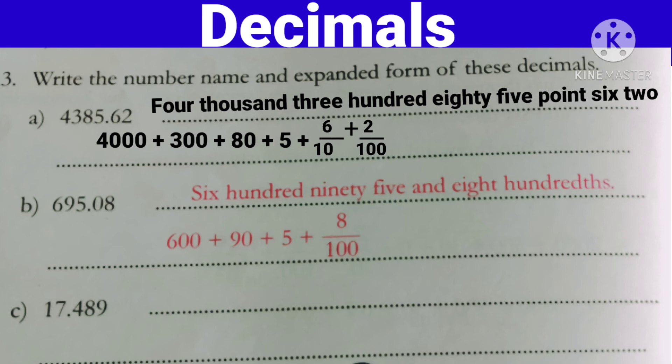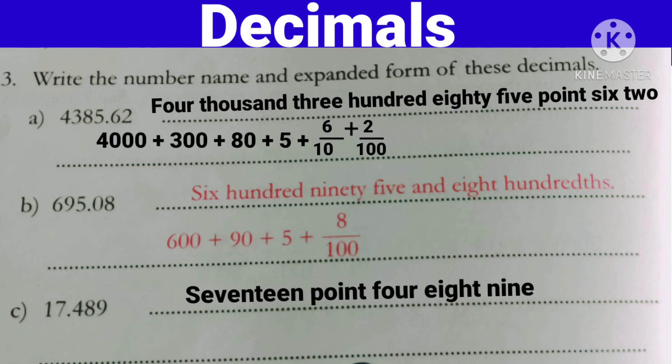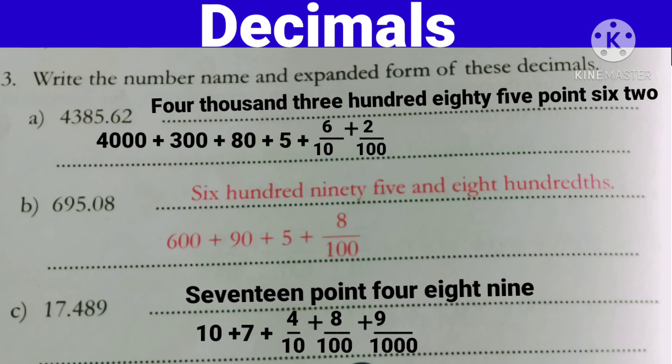Now next one — seventeen point four eight nine. Toh isko hum number form mein kis tarah se likhenge? 17.489. Ab iska expand form kya hoga? Seventeen ko hum likhenge: 10 plus 7, kyunki ye jo hai, ye whole part hai. Point ke baad start hoga fractional part. Toh isko hum kis tarah se likhenge? Point ke baad fractional part 10th se start hoga — yani four 10th place pe hoga, eight 100th place pe hoga, aur nine 1000th place pe hoga. Toh: 10 + 7 + 4/10 + 8/100 + 9/1000.